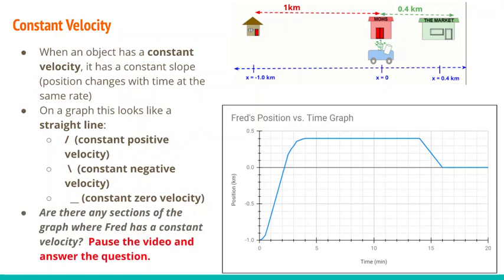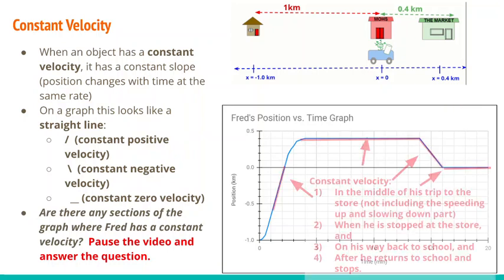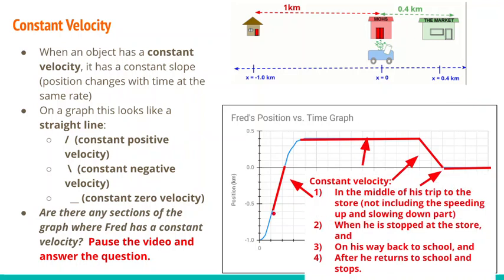Are there sections of the graph where Fred has a constant velocity? Fred has a constant velocity in the middle section going towards the market — it straightens out for a while between the curves. He has constant zero velocity while stopped at the store from 4 to 14 minutes, constant negative velocity when returning to school, and constant zero velocity again when stopped at school from 16 to 20 minutes.